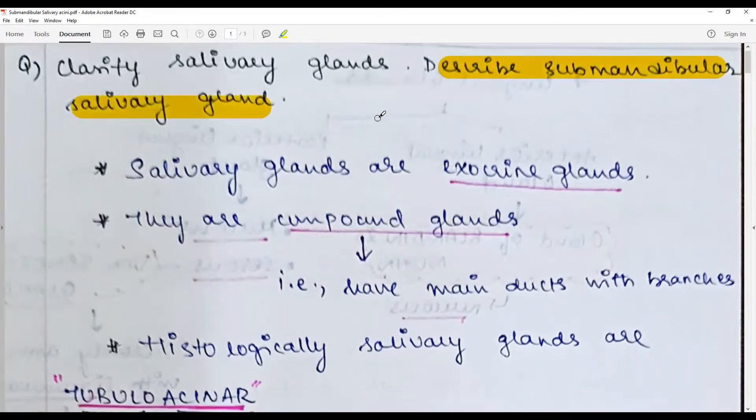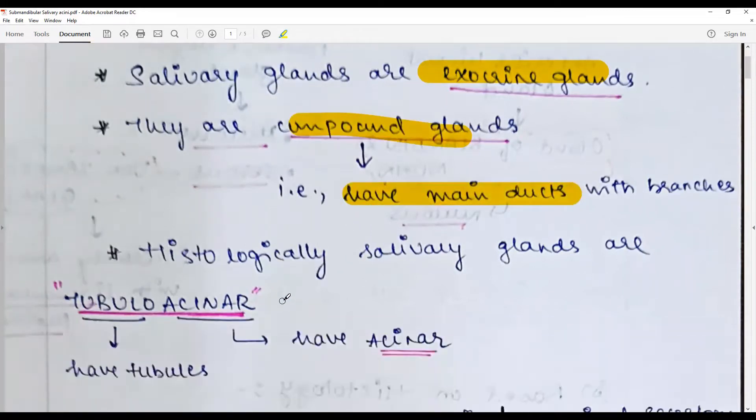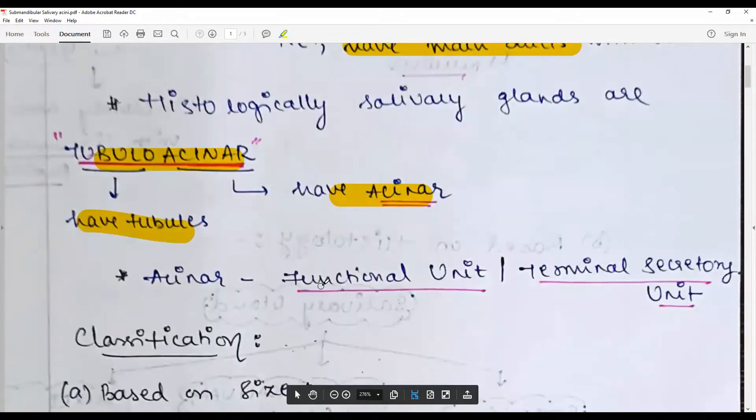Salivary glands are exocrine glands. They are compound glands, that is, they have main duct with many branches. Histologically, salivary glands are tubuloacinar, meaning they have tubules as well as acini. Acinar is the functional unit and terminal secretory producing unit.